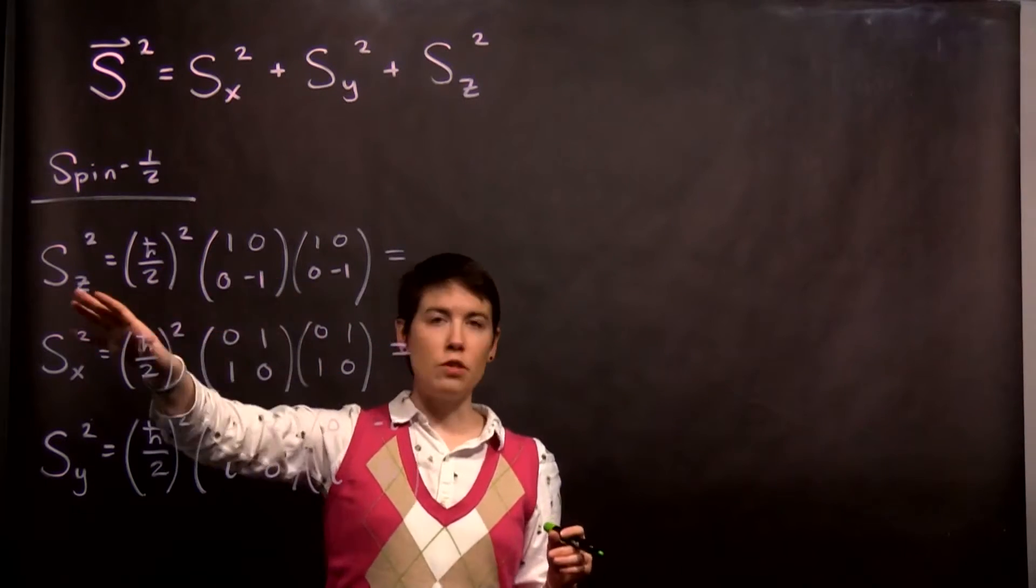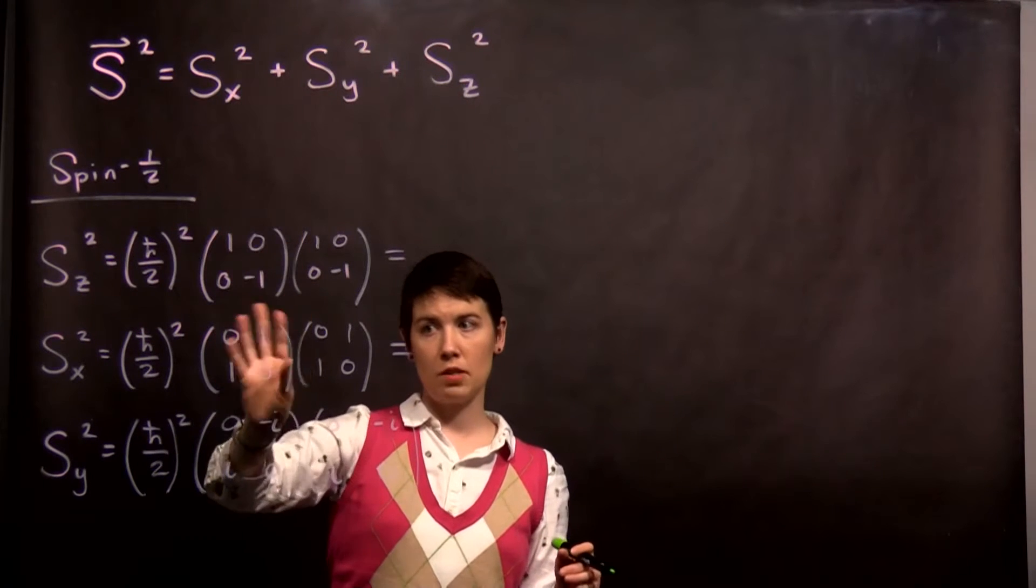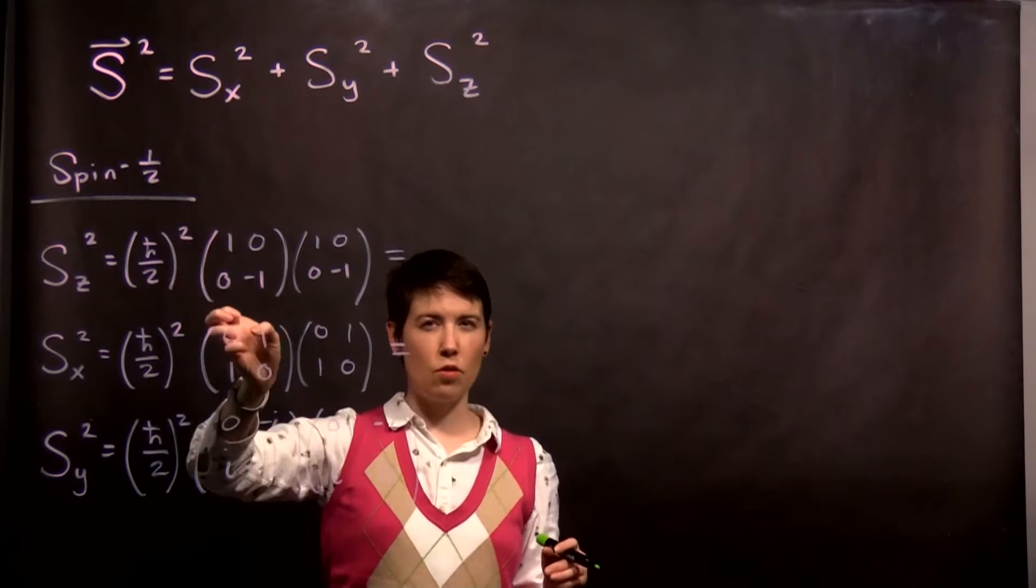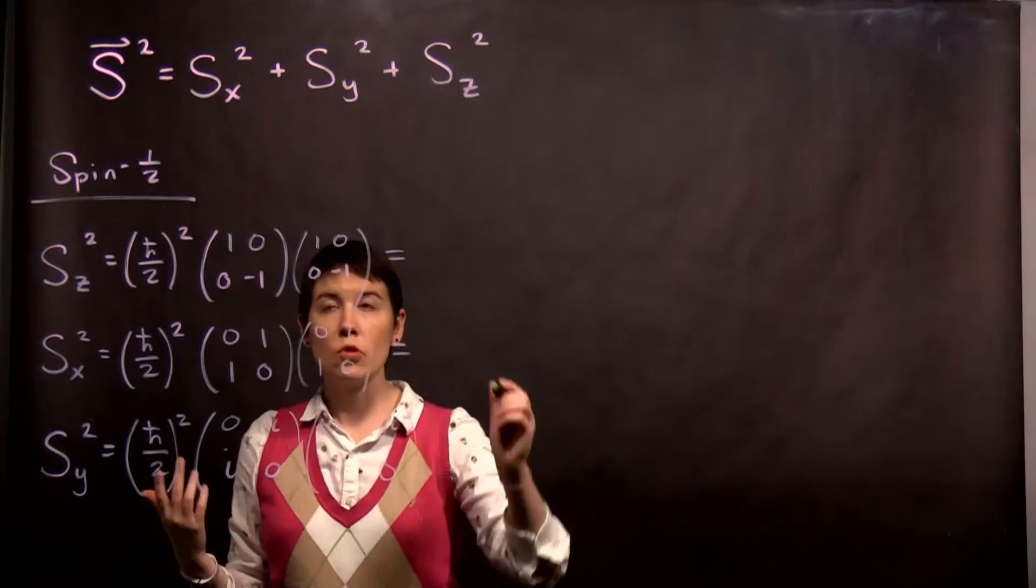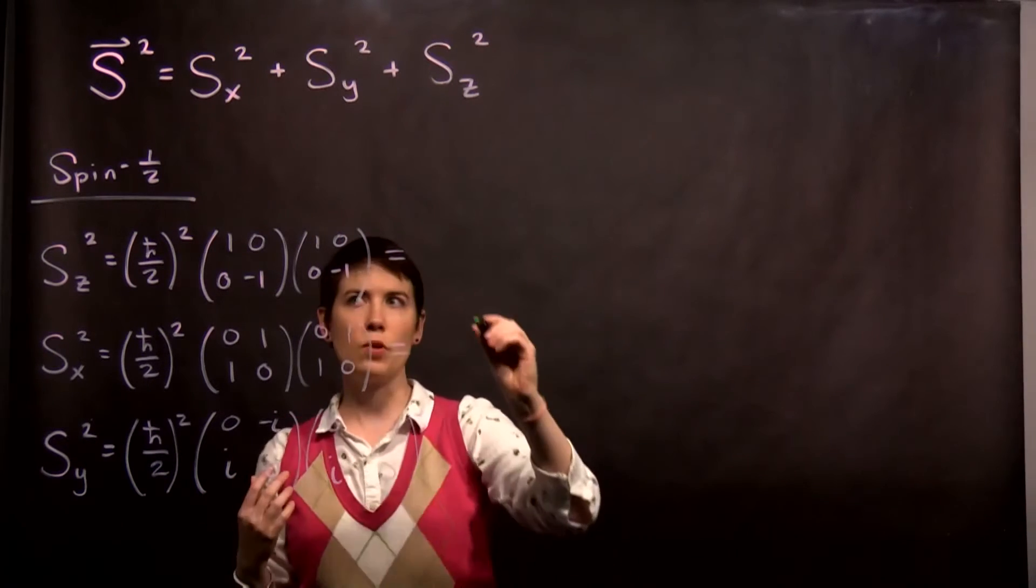So I've already done the first step of writing down the SZ, SX, SY operators, and then pulling together the coefficients out front. So now let's really quickly do this out and see what this works out to be in the spin one-half situation.